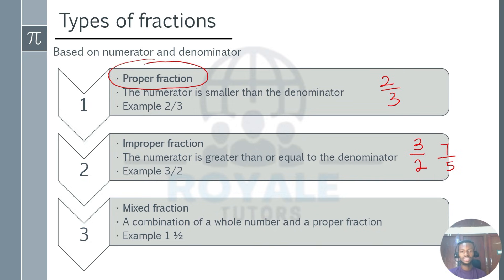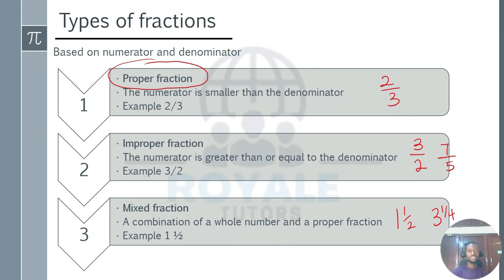The third type is the mixed fraction — a fraction that combines a whole number with a proper fraction. An example is 1 whole and 1 half. Another example is 3 whole and 1 fourth, that is 3 whole and 1 quarter. When you have 3 as the whole number and 1 over 4 as the proper fraction, this is called a mixed fraction. These are the three types of fractions.